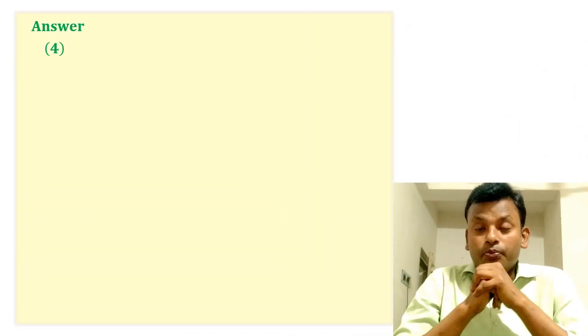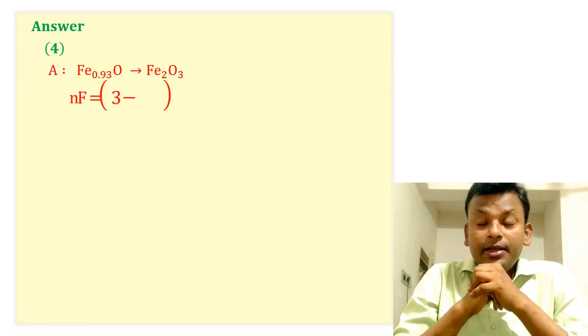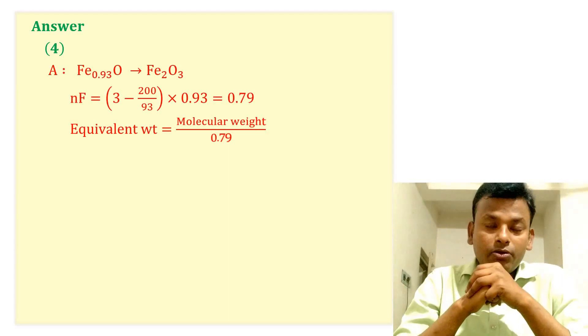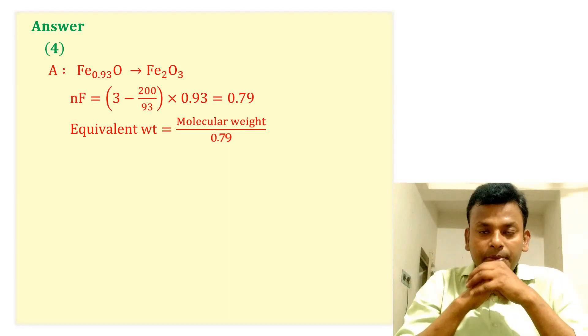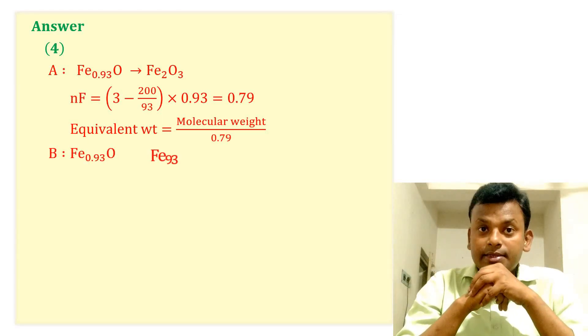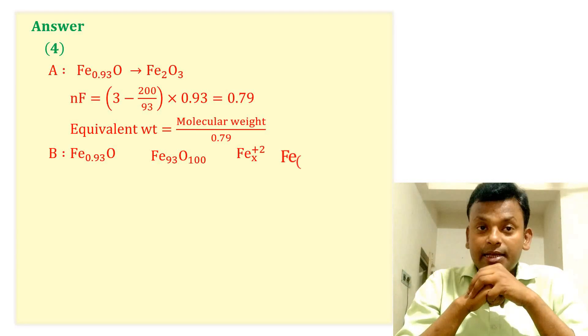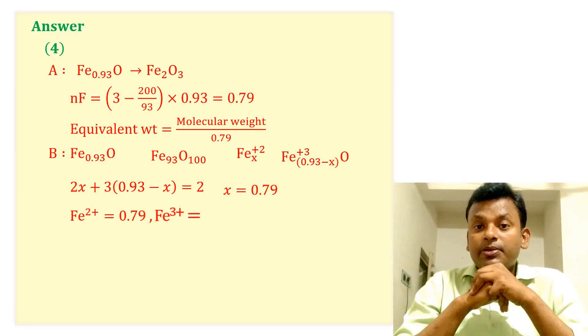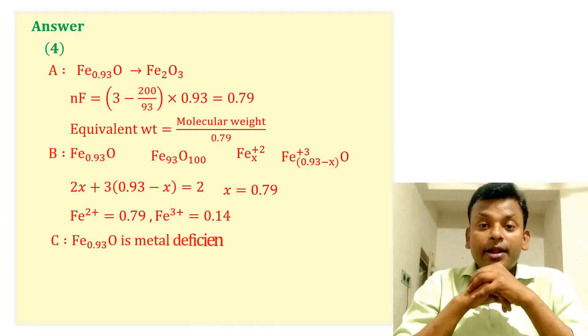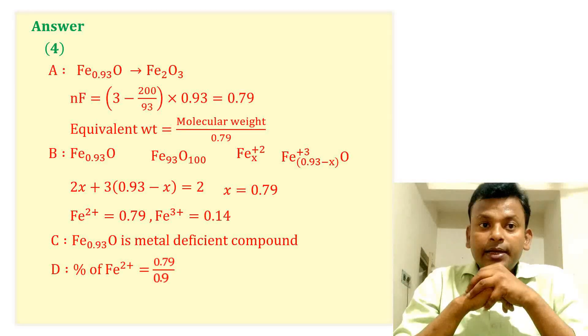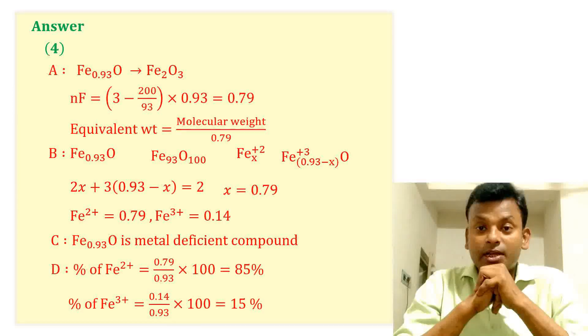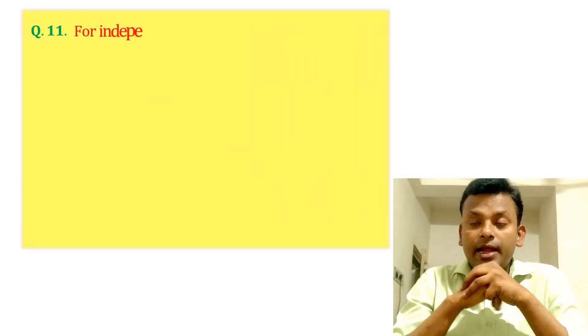Answer is 4. Here all options are correct. A. Fe0.93O gives Fe2O3, so nf equals to 0.79. Equivalent weight equals to molecular weight by 0.79. B. For Fe0.93O: Fe2 plus x, Fe3 plus 0.93 minus x, oxygen. From the equation, x equals to 0.79. So Fe2 plus equals to 0.79, Fe3 plus equals to 0.14. C. Fe0.93O is metal deficient compound. D. Percentage of Fe2 plus equals to 85%, percentage of Fe3 plus equals to 15%. So all options are correct, answer is 4.